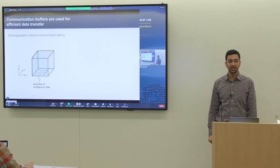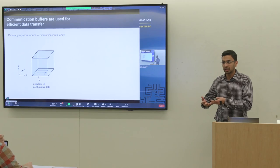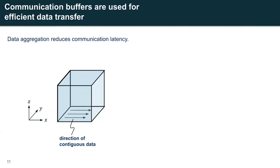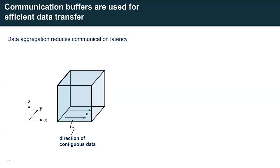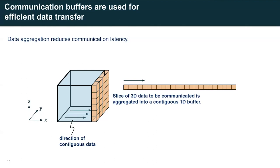Communication buffers are basically a staging area for data before it is sent to a different process. There are multiple advantages to using communication buffers, but I'll focus on data aggregation. Say you have a three-dimensional grid of data in AMREX on a specific process, with a specific direction of contiguous data in memory. If we want to transfer a slice of that data to a different process, none of the data in that slice lies contiguously in memory. So AMREX aggregates all of this data into a single one-dimensional contiguous buffer, which is then sent to the target process and unpacked. This reduces the number of messages drastically and saves latency costs.